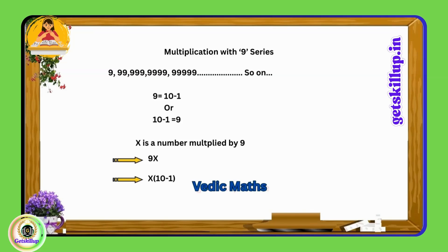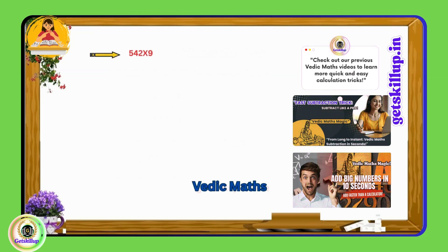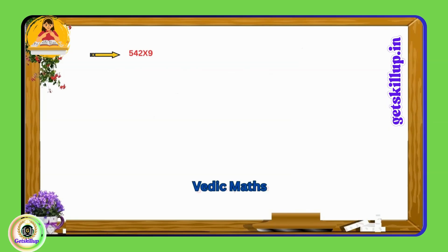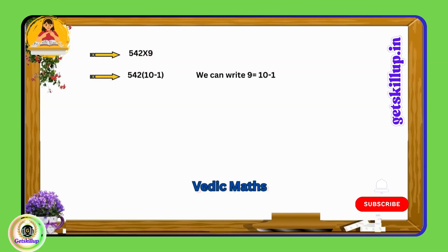Consider the question 542 multiplied by 9. To solve this, we first multiply 542 by 10 minus 1 as per the logic explained earlier. When we multiply a number by 10, we simply add a 0 to the right of the number. So, 542 multiplied by 10 becomes 5420.